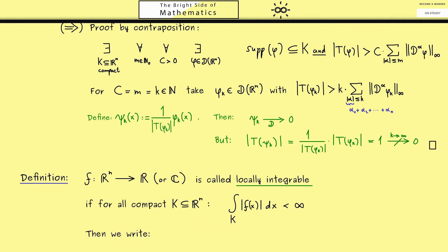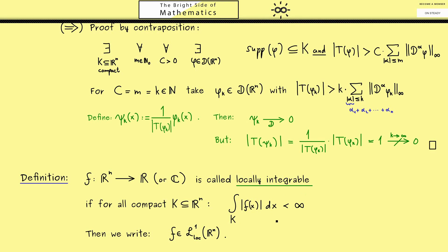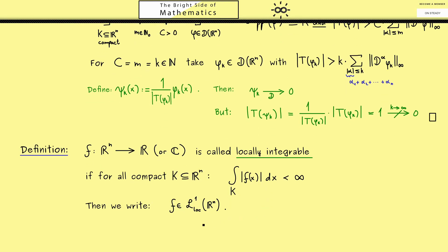Now for such locally integrable functions, we use a common notation. Namely, we write a curved L with 1 and loc. And often we put in the domain, which is here R^n.